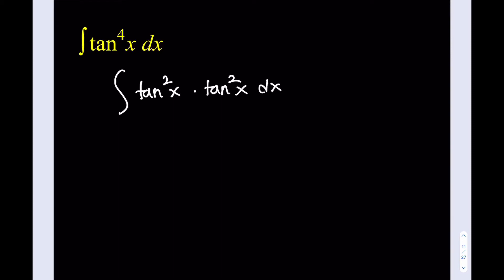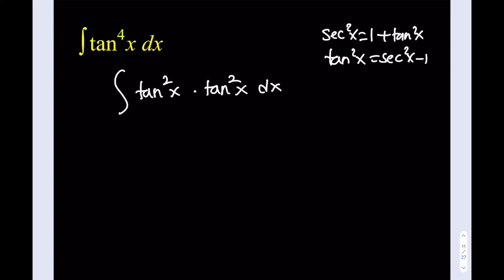The reason I write it this way rather than as (tan²x)² is that I want to replace one of the tangent squares while keeping the other. Remember: secant squared equals 1 plus tangent squared, so tangent squared equals secant squared x minus 1. I'll replace the second tangent squared with secant squared x minus 1. This gives tangent squared x times (secant squared x minus 1) dx. Distributing: the integral of tangent squared x · secant squared x dx, minus the integral of tangent squared x dx.